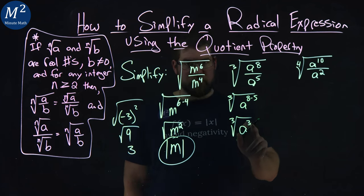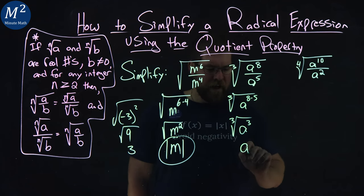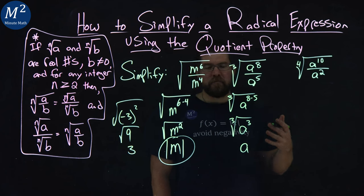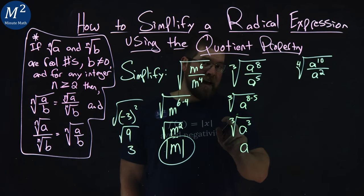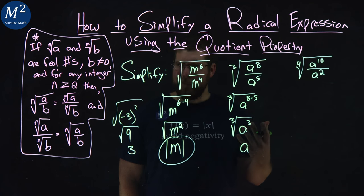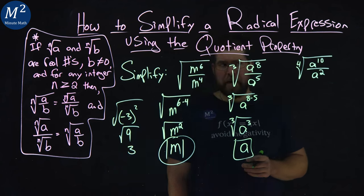Same idea. Third root of something to the third power is itself. We have an a. And this time we don't have to worry about the absolute value. This happens when we have odd exponents. The negative sign will come back, so we don't have to worry about that. Our solution here is a.